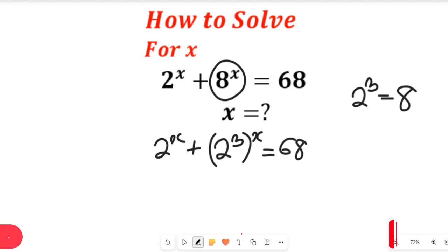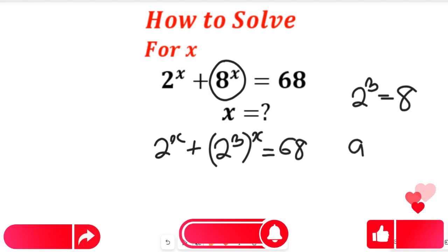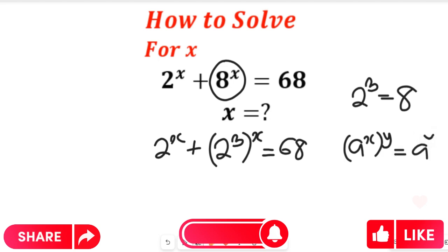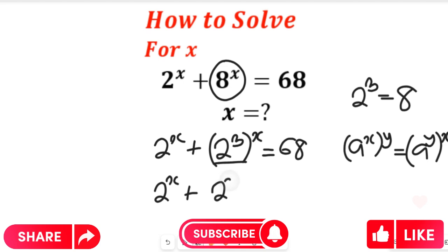Now remember the law of indices. We will have a to the power of x multiplied by y, which can be equal to a to the power of y, multiplied by the exponent of x. If we apply that to this expression, we're going to have 2 to the power of x plus 2 to the power of x multiplied by the exponent of 3, and this will be equal to 68.